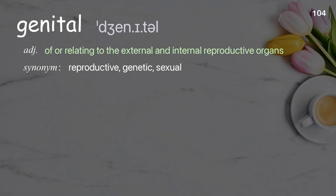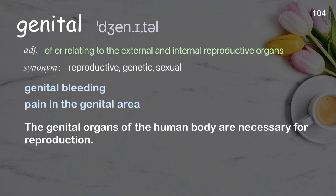Genital: of or relating to the external and internal reproductive organs. Examples: genital bleeding, pain in the genital area. The genital organs of the human body are necessary for reproduction.